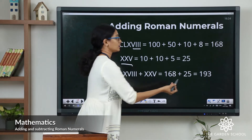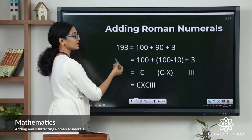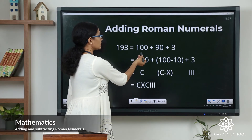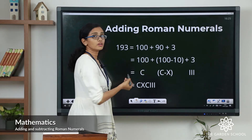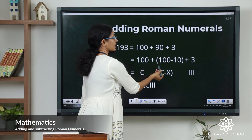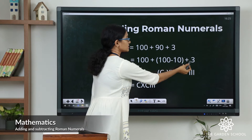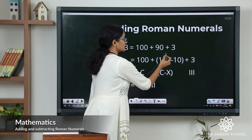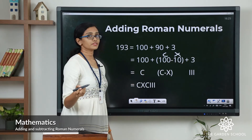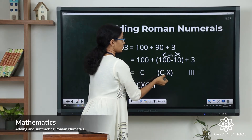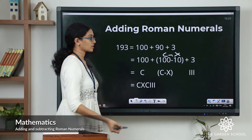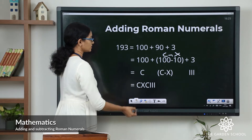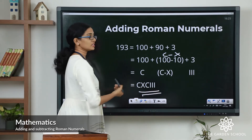So from the question: 168 plus 25 equals 193. Now let's find the Roman numeral for 193. 193 can be written as 100 plus 90 plus 3. We have a symbol for 100 but not for 90, so let's rewrite 90 as 100 minus 10. 100 is C, and from the rule of subtraction C minus X equals XC. For 3 we have three I's. So the Roman numeral for 193 is CXCIII.